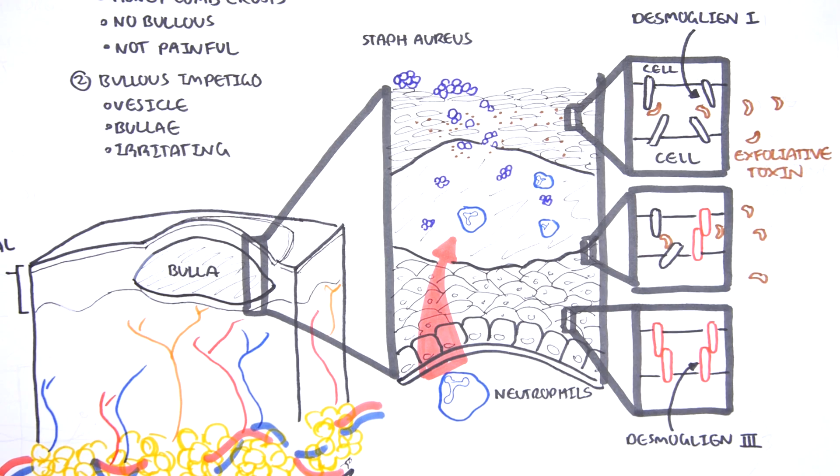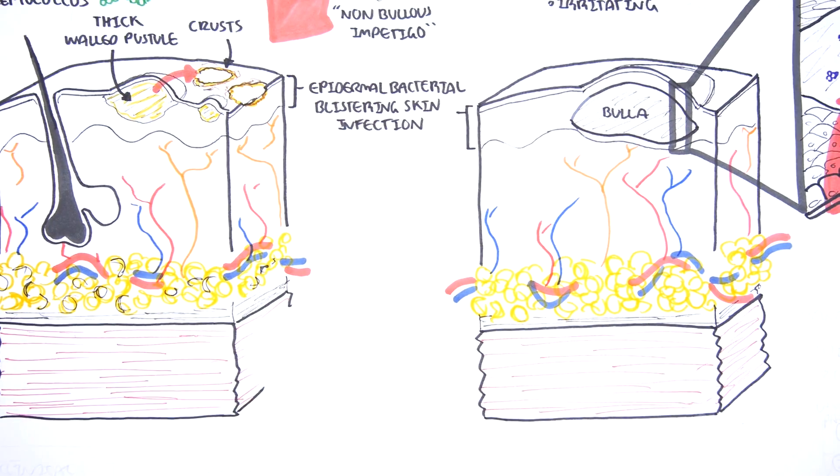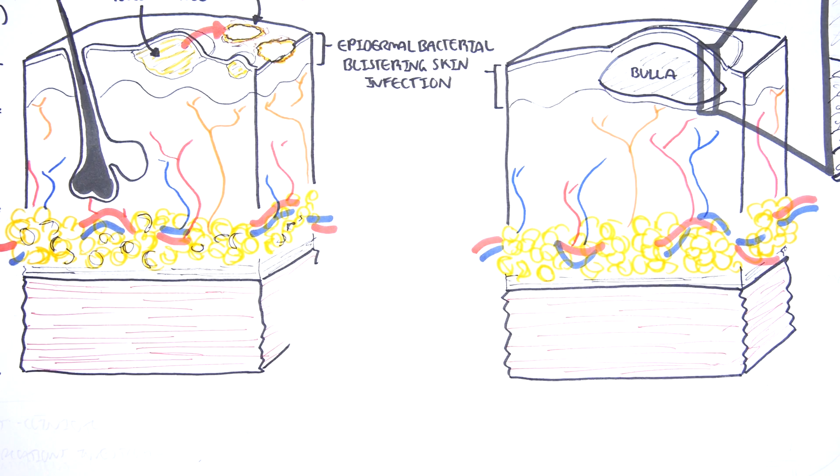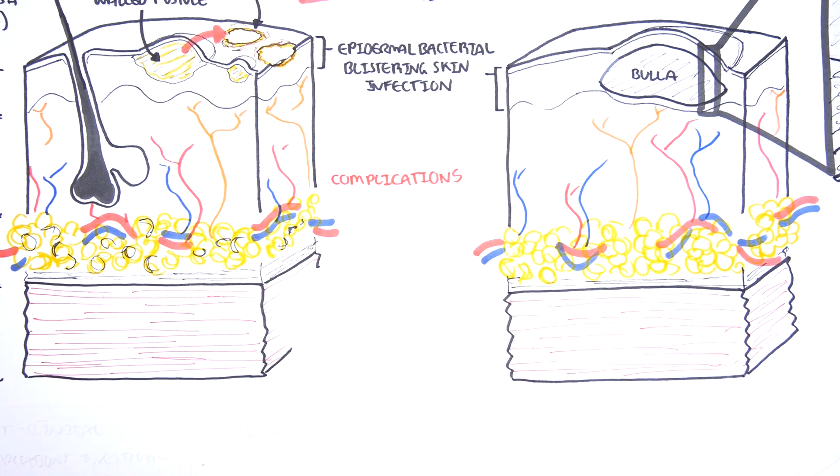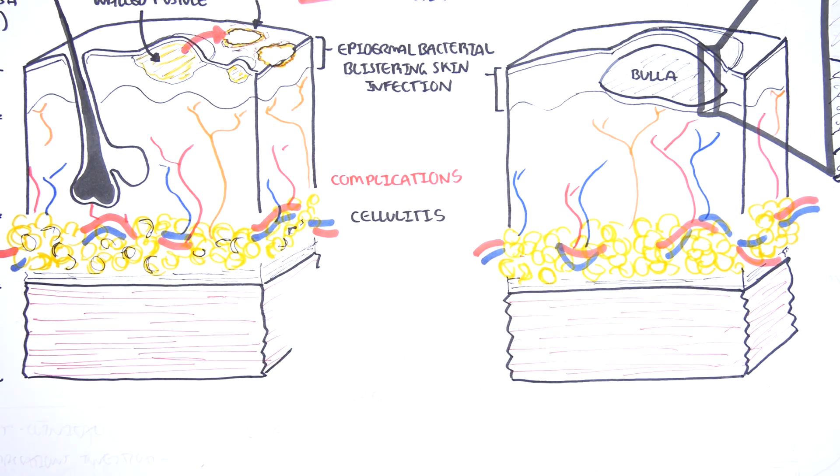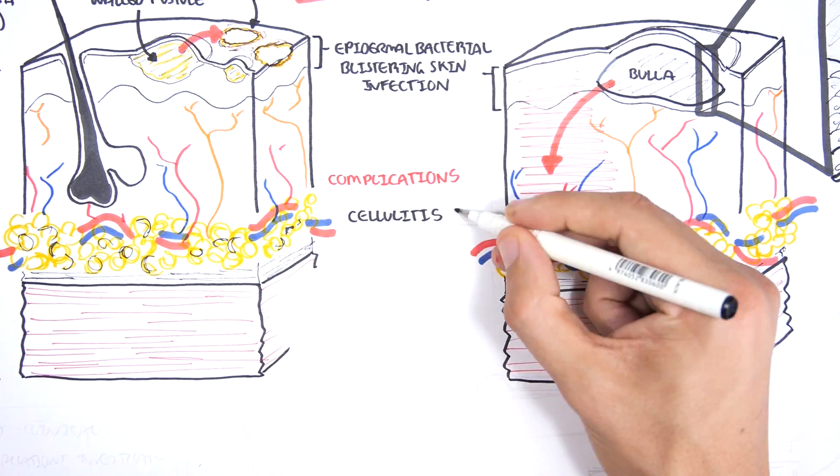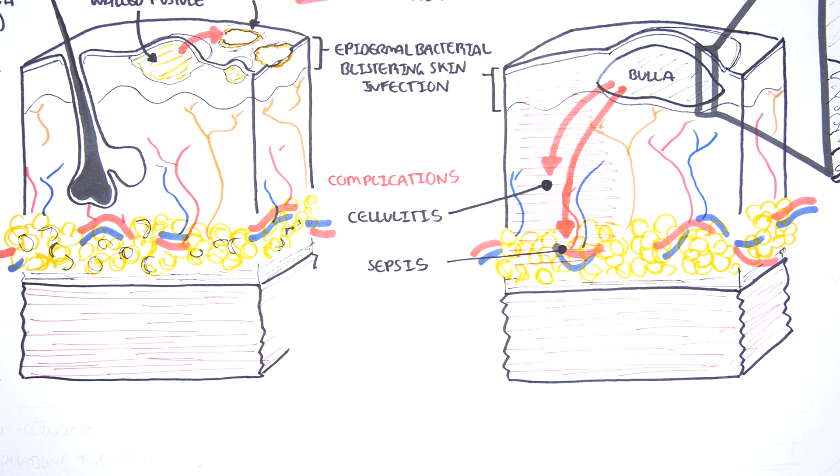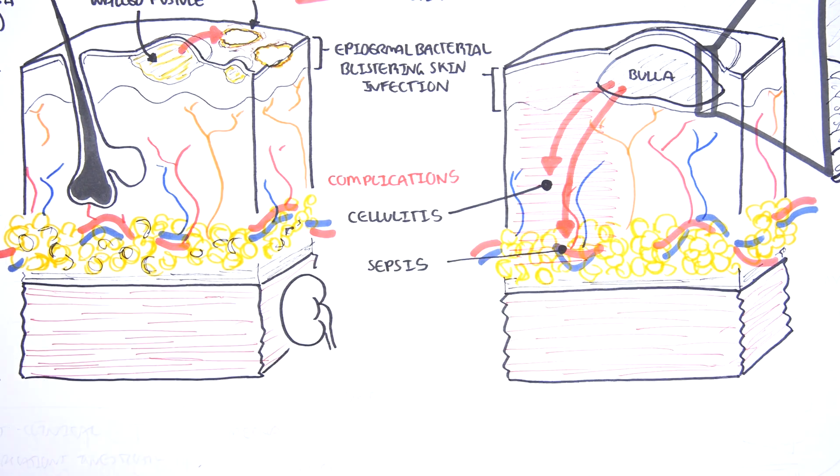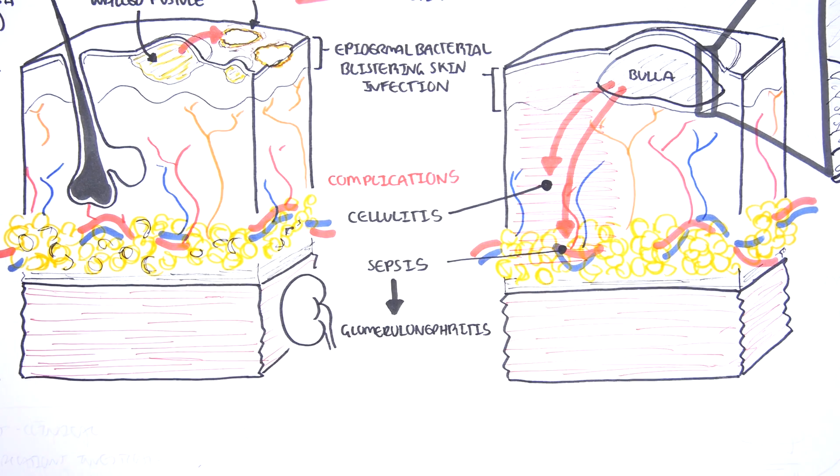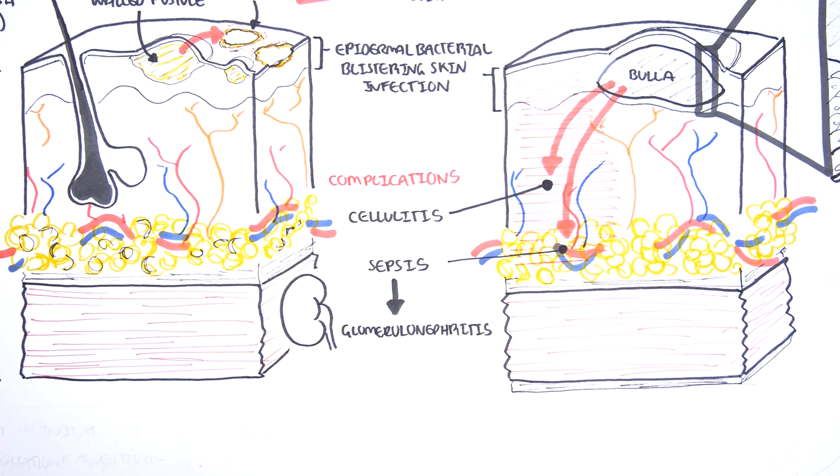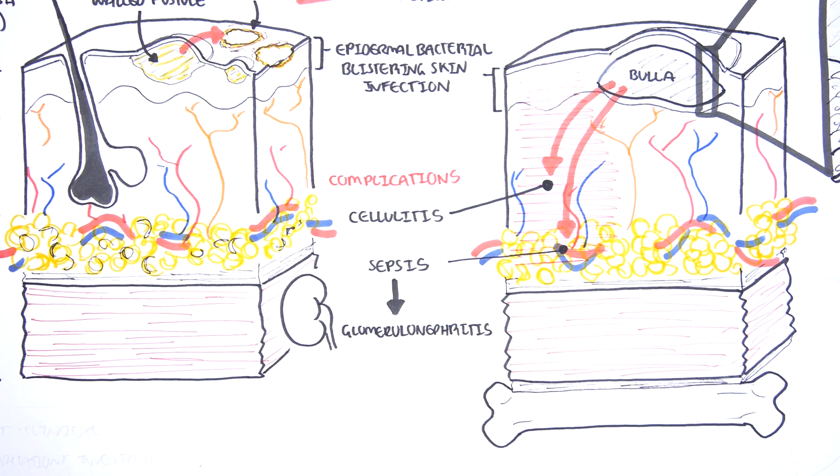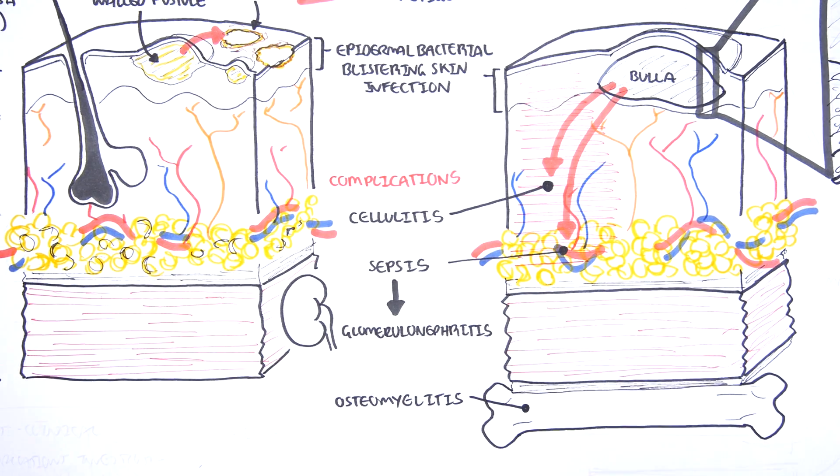However, if the bacteria is able to go past the epidermal area, it can cause some complications. These complications include cellulitis, which is infection of the dermal and subcutaneous tissue. If the bacteria can invade further, it can also enter the blood vessels, such as the capillaries, causing sepsis and bacteremia. Other complications of impetigo include glomerulonephritis, which is particularly caused by group A streptococcus, also known as strep pyogenes. In severe and rare cases, it can also cause osteomyelitis as a complication.